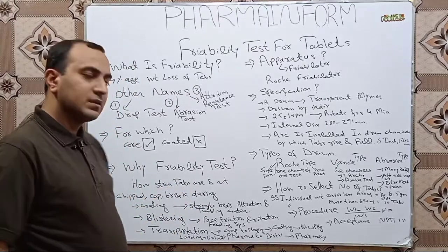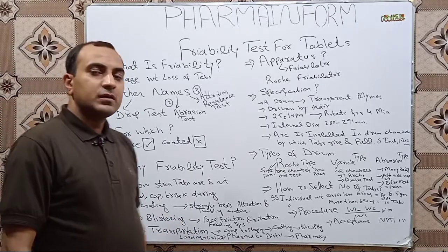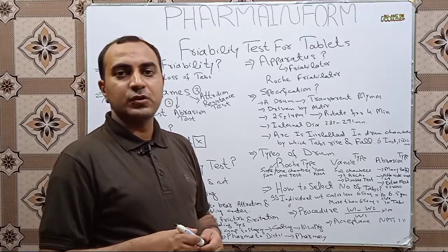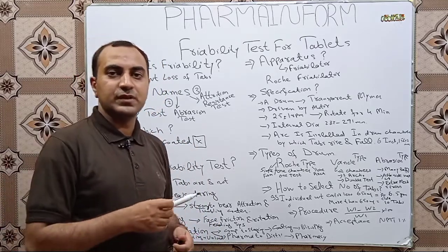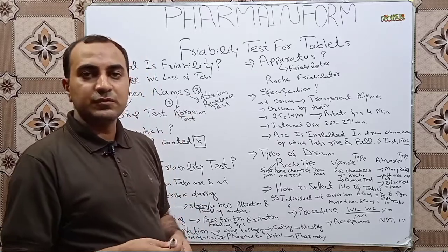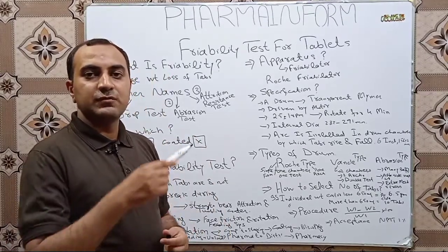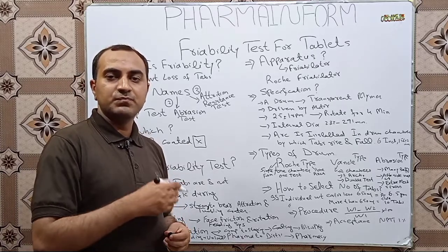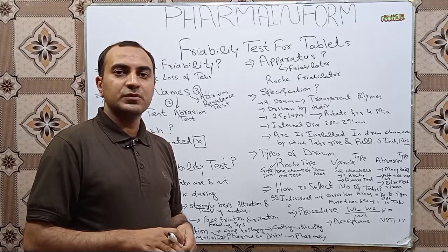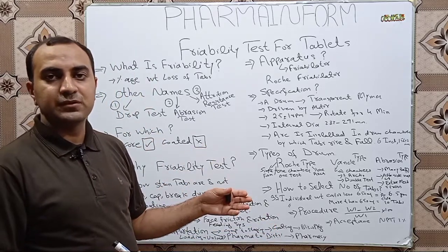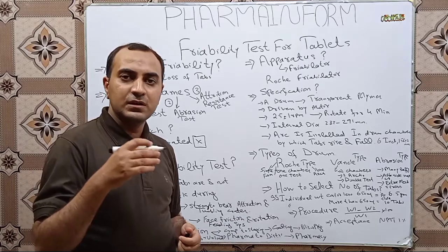During coating, which is a lengthy process taking at least two to three hours, tablets rotate in a rotating drum during which they must bear attrition and tumbling forces. If tablets are not strong enough, they will break down, cap, or chip during the coating process, resulting in poor quality coated tablets and an unsmooth coating process. So we perform friability test during and before the start of compression operation.